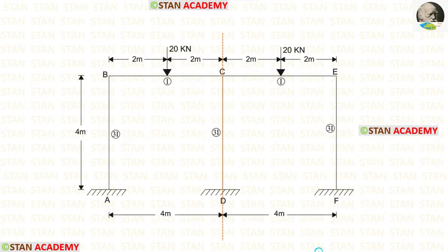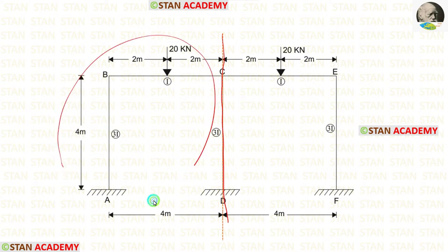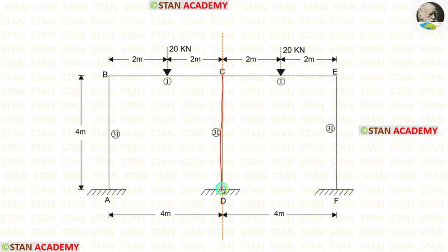This is a symmetrical frame. The line of symmetry passes through the middle column. From the line of symmetry, we can separate this frame into two parts. Let us take the left side and do the analysis. In the column CD there will be no rotation, so we can assume that the point C is fixed.